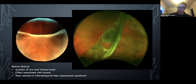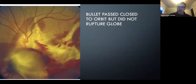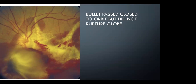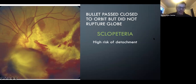This injury is associated with a bullet that does not result in a ruptured globe — sclopetaria. These patients are at very high risk for secondary retinal detachments and primary PDR. By definition they don't have scleral rupture, but they will often have choroidal rupture, retinal rupture, and just a very bad-looking eye.